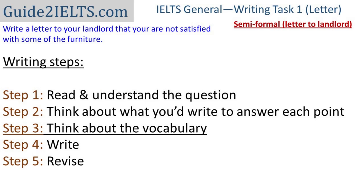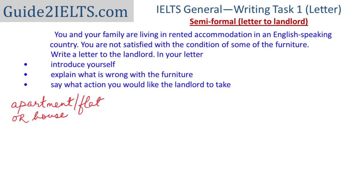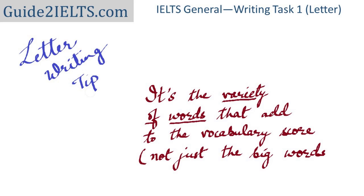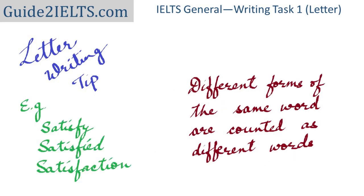Once we know what we're going to write, let's think about vocabulary. For accommodation, I could write either house, apartment, or flat. Instead of 'living,' I would write 'residing' or 'am a resident of.' Instead of 'not satisfied,' I can write 'dissatisfied,' 'unhappy with,' or incorporate nouns like 'satisfaction' and 'dissatisfaction.' It's the variety of words — including different forms of the same word — that adds to your lexical resource score, not just big words.